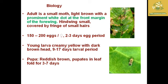The larval stage lasts about 9 to 17 days. The larva is creamy yellow with a dark brown head. The pupa is reddish brown and found in a leaf fold, lasting about 3 to 7 days.